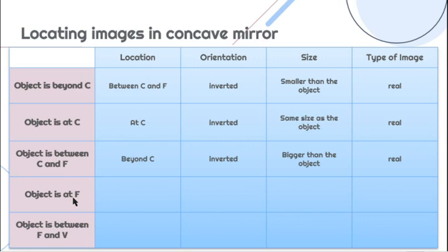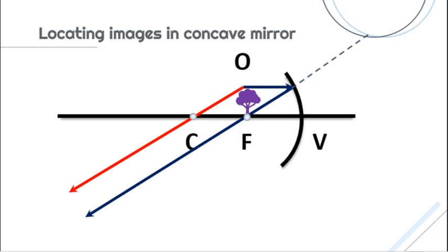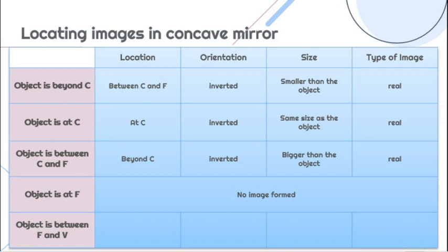If the object is at F or at the principal focus, the first ray travels parallel to the principal axis passing through the principal focus, and the second ray passes through the center of curvature. As you can see, the two reflected rays form a parallel line. Since parallel lines do not intersect, there will be no image formed when the object is at F.